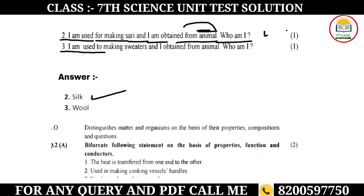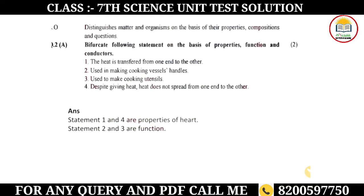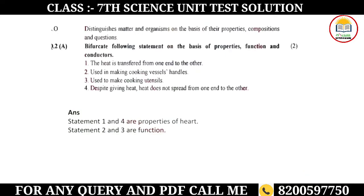I am used for making such cloth and I am obtained from animals — I am silk. So the answer is silk, which is obtained from silkworms. Question number two also asks us to look at the following statements on the basis of properties, function, and conductor.